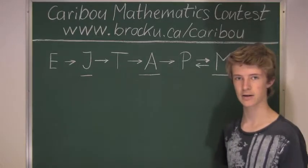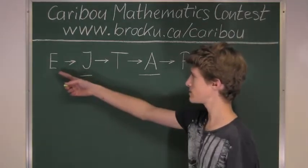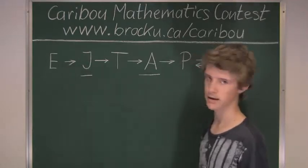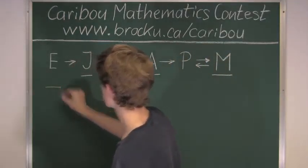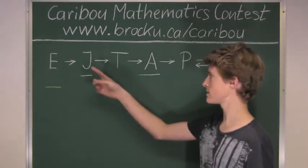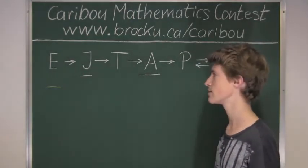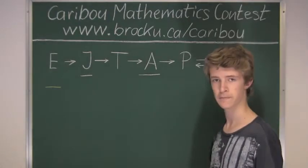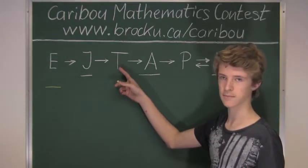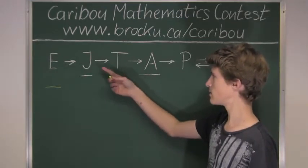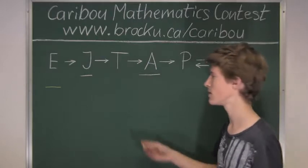The second case is that Eric is lying. So we would already start by underlining E for Eric. Eric says that John lies, but since Eric is lying, we know that John is actually telling the truth. Then John says that Tony lies, and since we know that John is telling the truth, we know that Tony does lie.